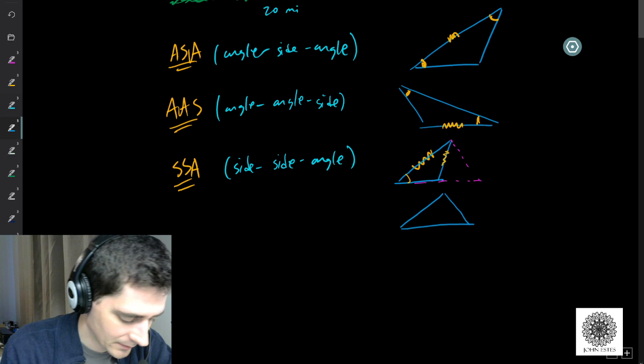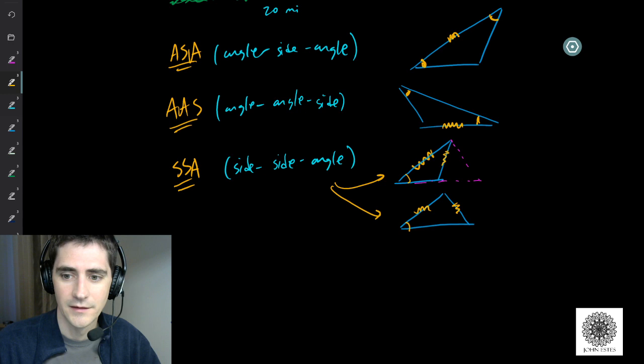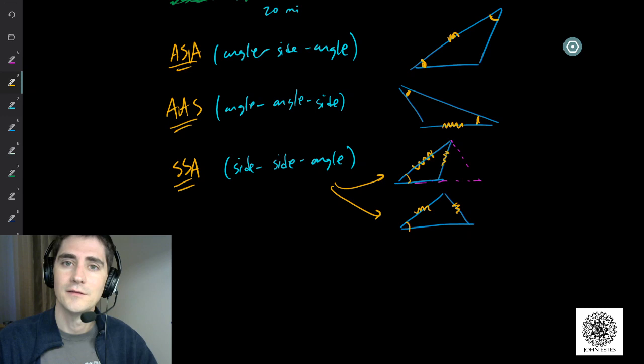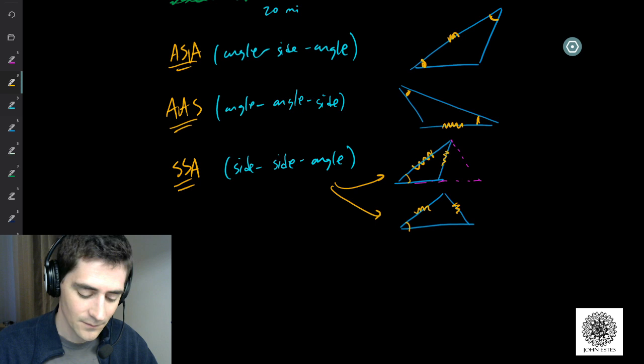With the side-side-angle case, you could have one of two triangles, potentially. I recommend first identifying what kind of case you're looking at, because that'll help you figure out whether the law of sines can work, and whether it falls into this side-side-angle category that can be tricky — the ambiguous case.